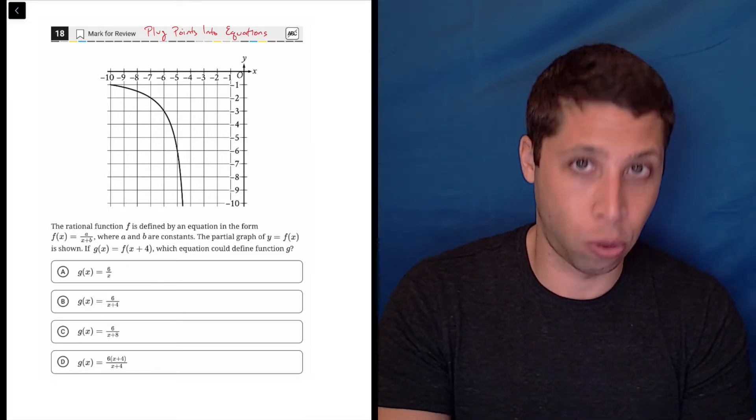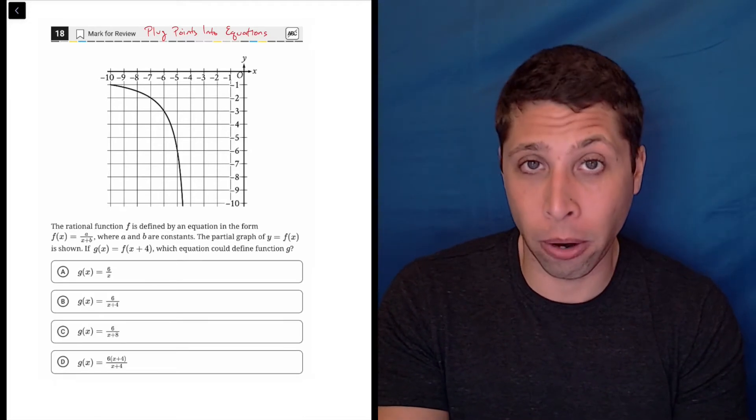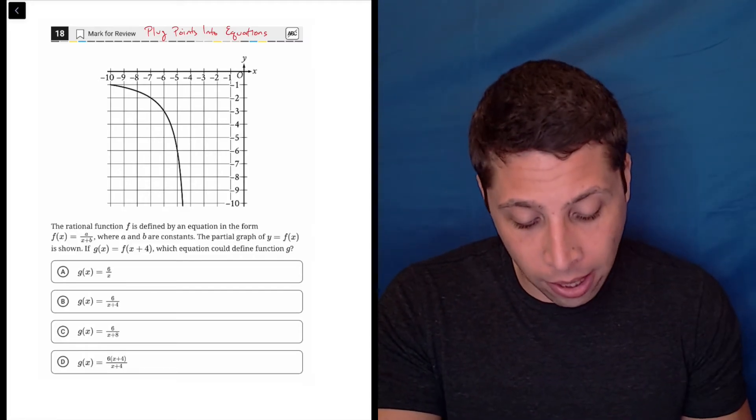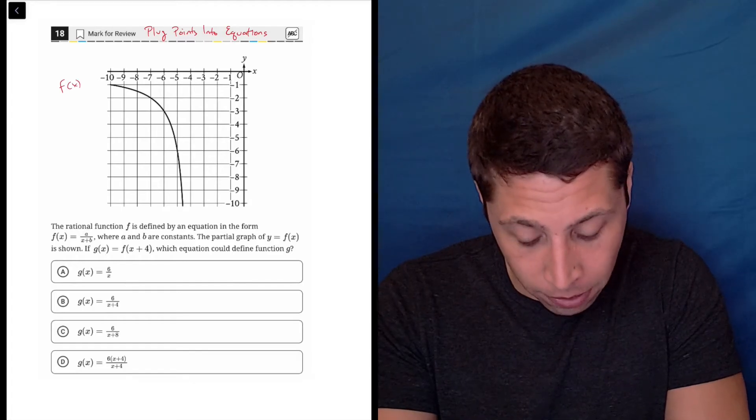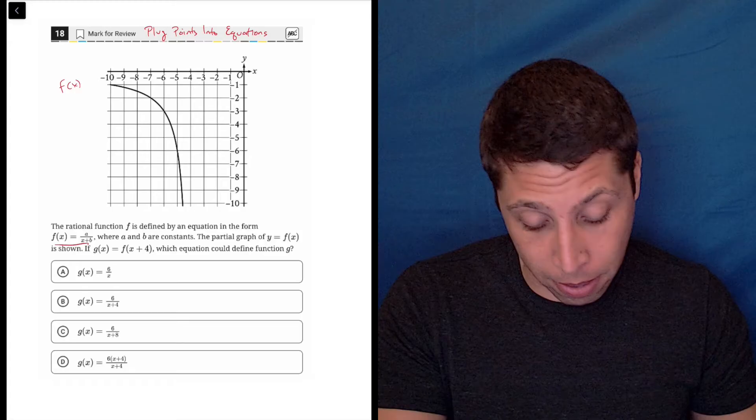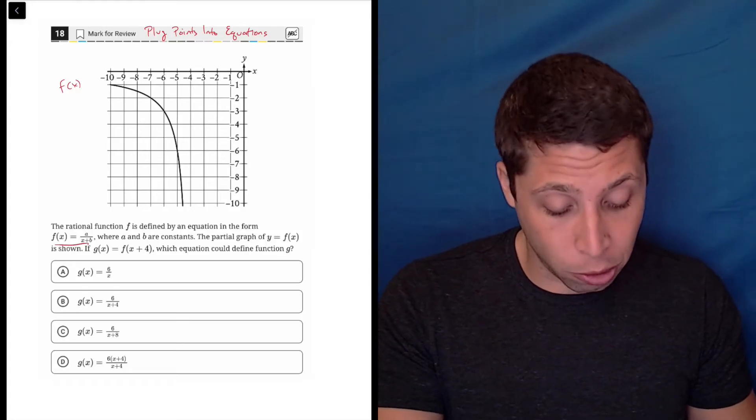So we have to understand the story, and that is to me the hardest part. You have to memorize some facts here. They're telling us that this is the graph of f of x, which has some weird equation with some missing pieces, right, a and b.